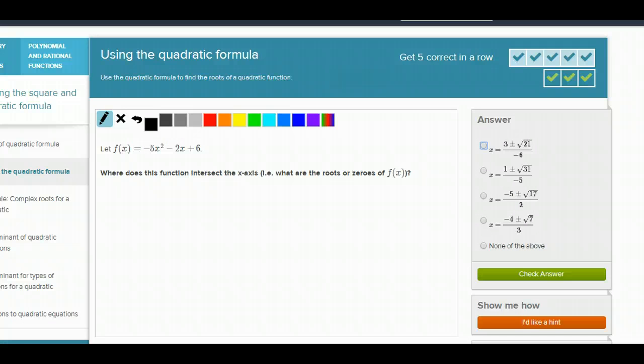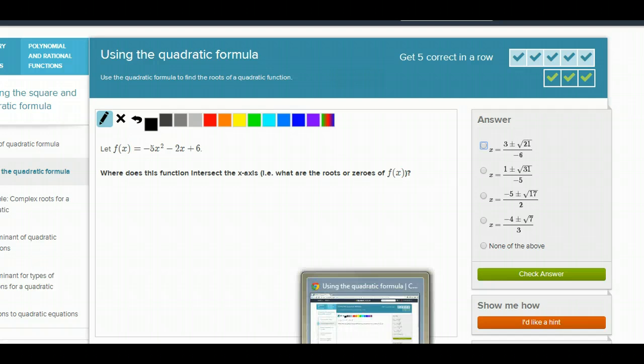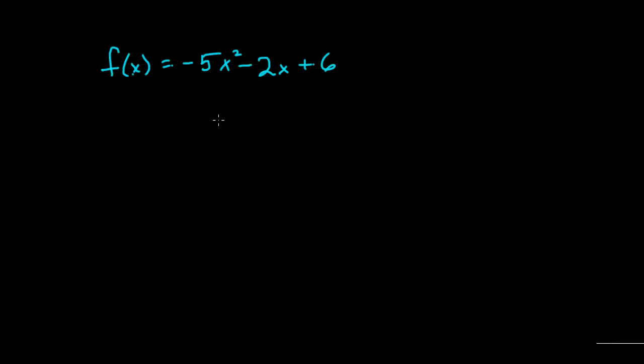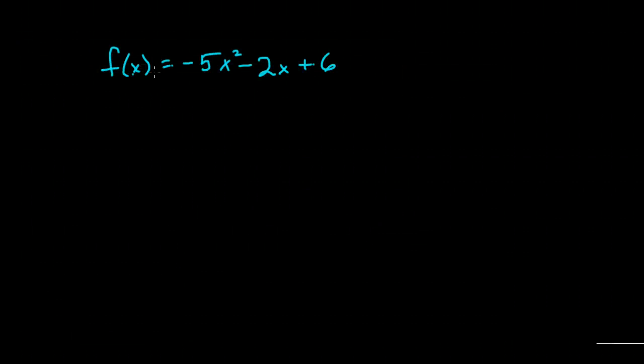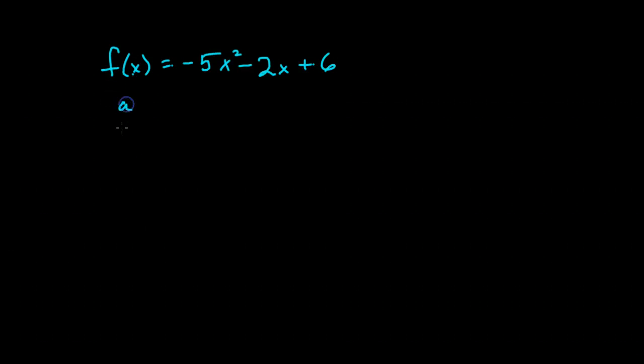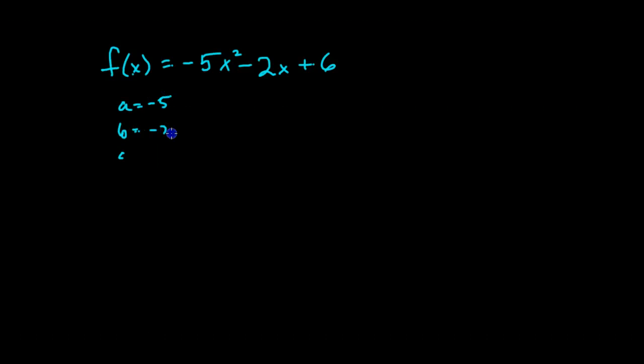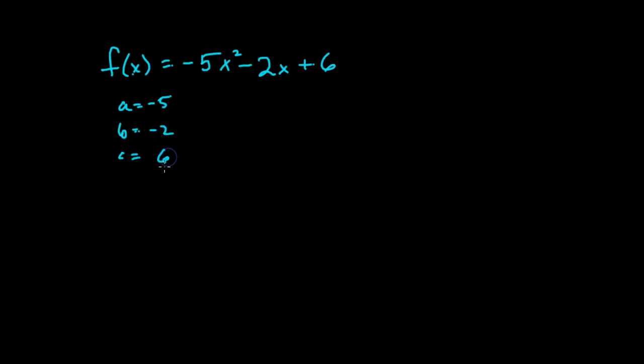Let's see if we can give ourselves a little bit more of a challenge trying to simplify our expression. Here we have f of x is negative 5x squared minus 2x plus 6. So our a, b, and c are negative 5, negative 2, and 6.